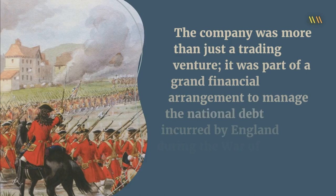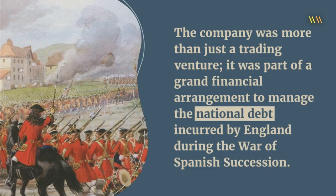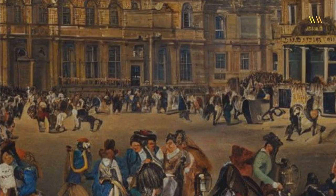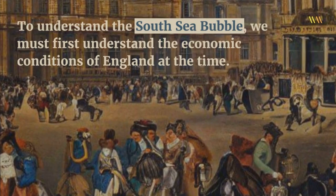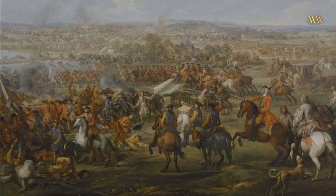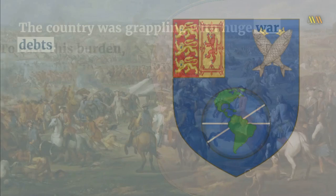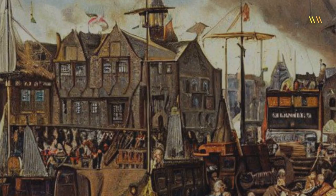To understand the South Sea Bubble, we must first understand the economic conditions of England at the time. The country was grappling with huge war debts. To ease this burden, the government allowed the South Sea Company to assume a significant part of the national debt. In exchange, the company was granted exclusive trading rights in the South Seas, what we now refer to as South America.